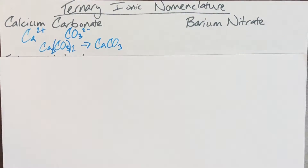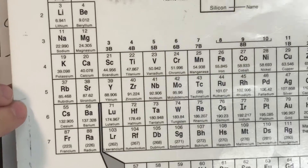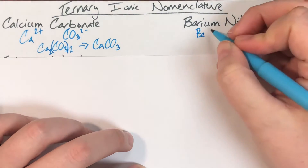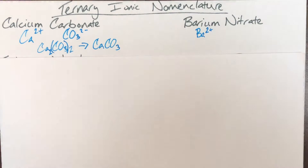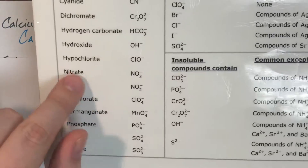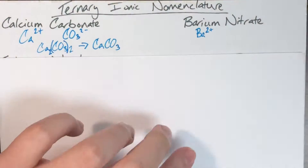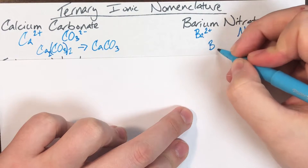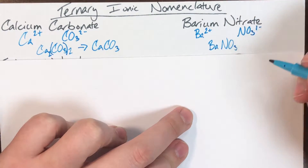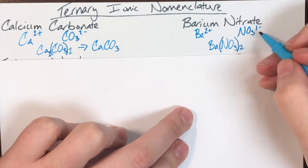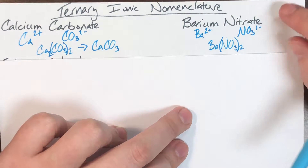Next is barium nitrate. Barium is Ba, and since it is in column 2A it has a charge of positive two. Nitrate, ending in '-ate,' is a polyatomic ion; I find it on my list as NO₃⁻. Barium's 2 becomes nitrate's subscript, so I protect nitrate in parentheses giving Ba(NO₃)₂. Nitrate's 1 becomes barium's subscript, but I don't write ones.